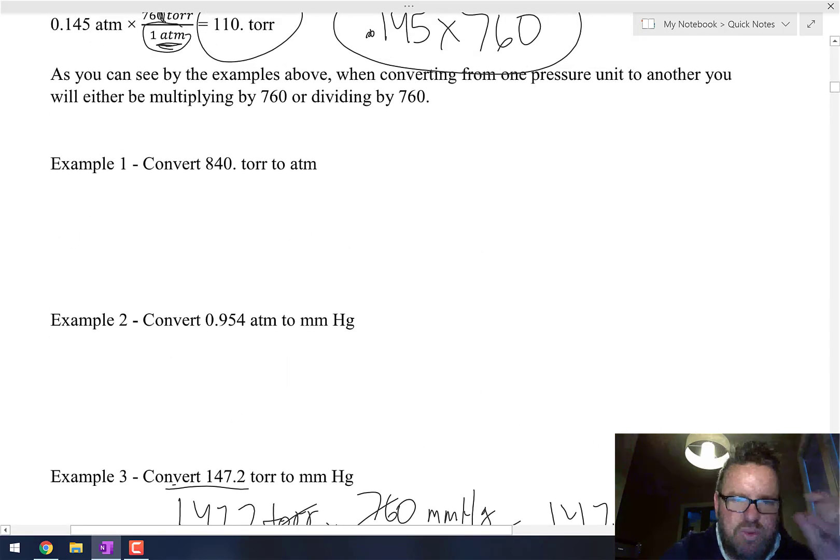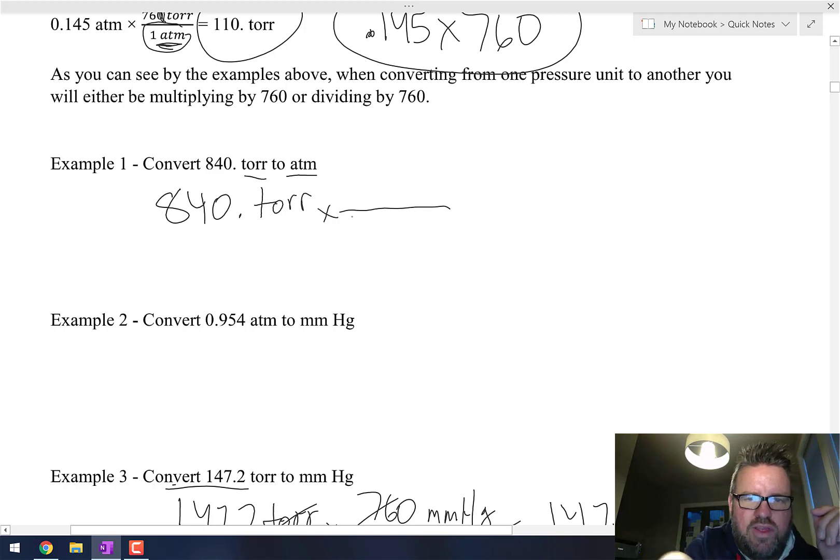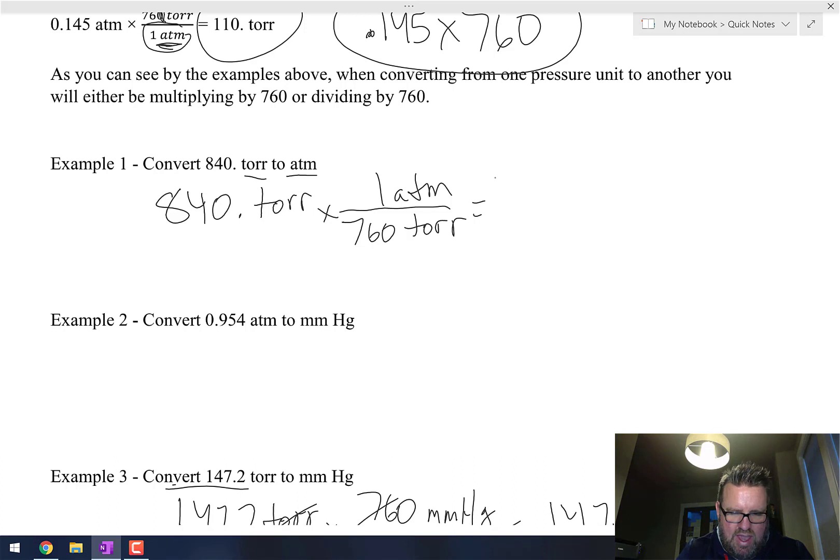Anytime you're going just between torr and millimeters of mercury, it's the same answer. In these other two examples, it's not. We're going from torr to atmosphere in example one, so I'm going to go 840 torr and then the conversion is 760 torr equals one atmosphere. Now I just take 840 and because the 760 is on the bottom, I'm going to divide by 760 and I get 1.11 atm. That's just a little bit above our normal atmospheric pressure.